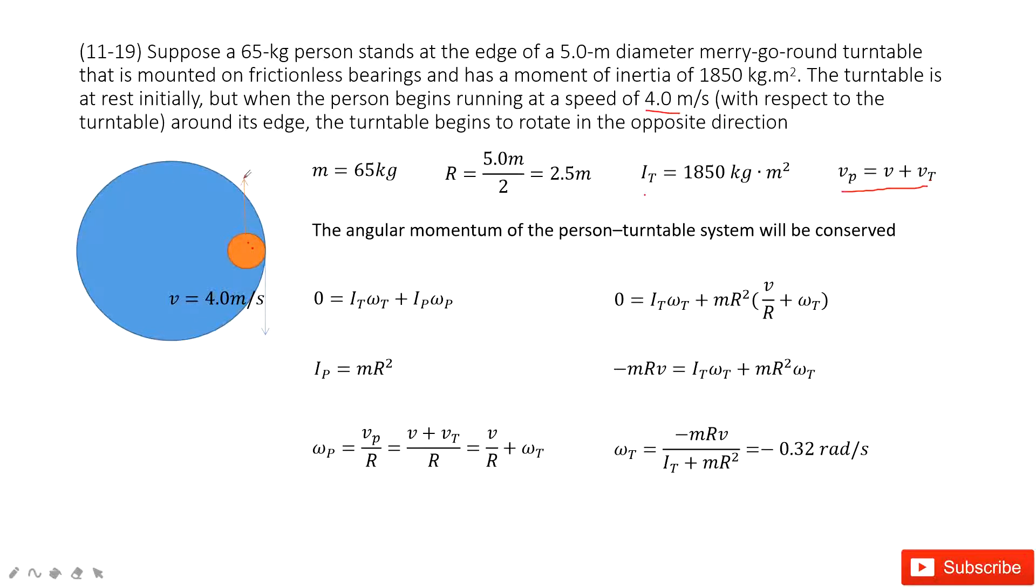Now we can consider this system, no external force acting. That means the angular momentum is conserved. So the initial angular momentum is zero because the person and the turntable are stationary. And finally, the angular momentum should include two parts, the turntable and the person. So we have It ωt plus Ip ωp.